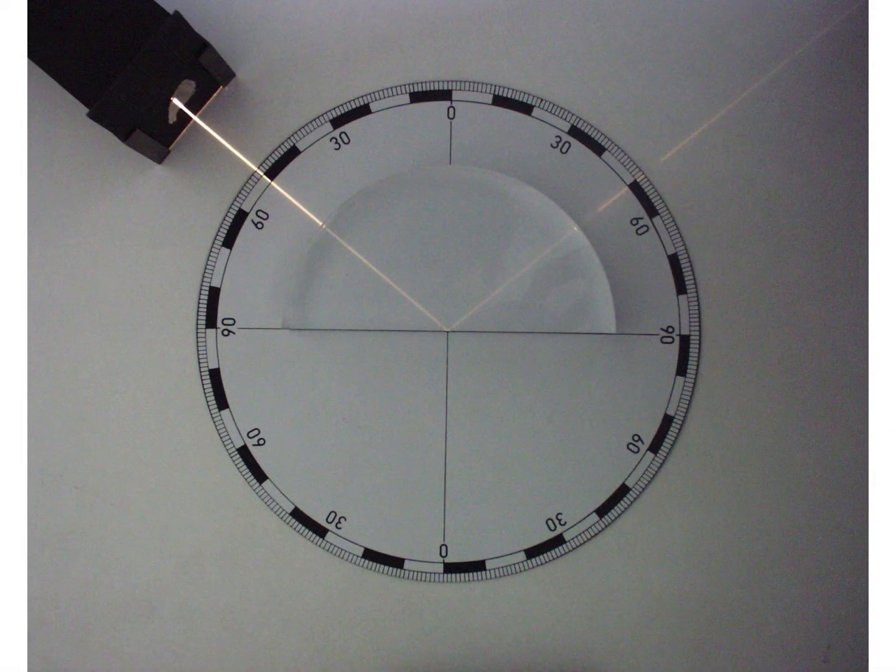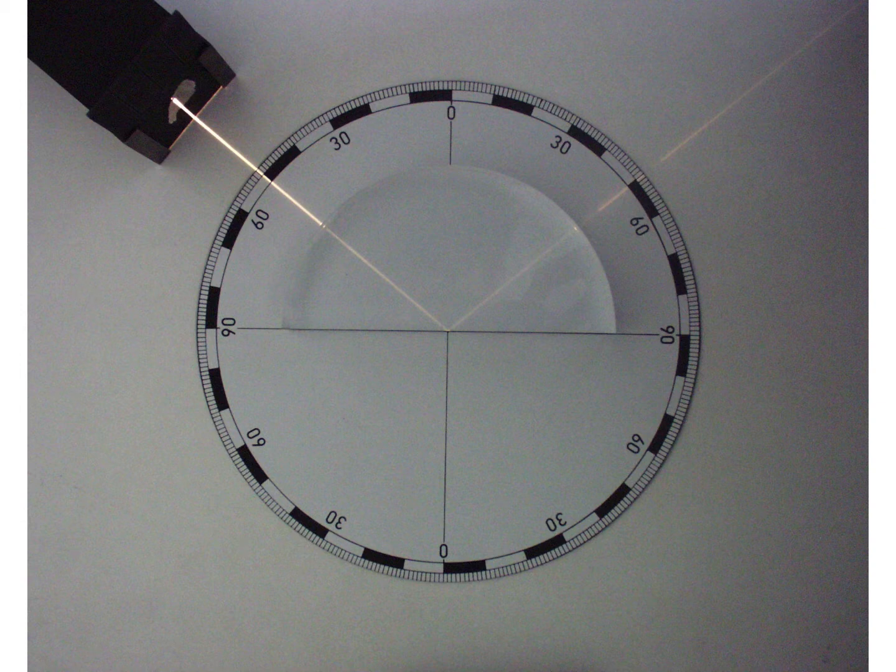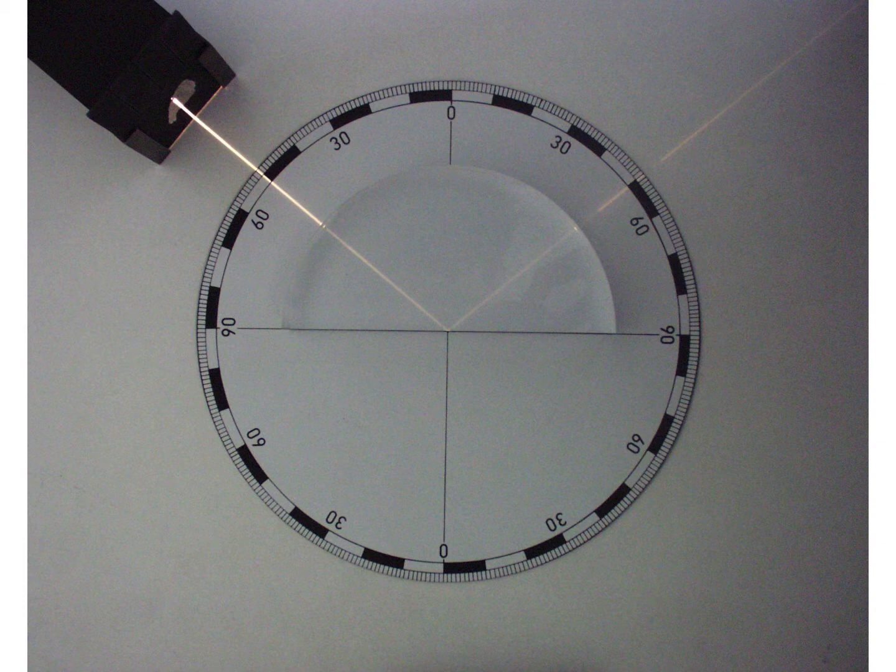You might have heard of a phenomenon called total internal reflection. Well if you haven't, total internal reflection occurs when light falls on the boundary between two materials of different refractive indices under certain conditions.